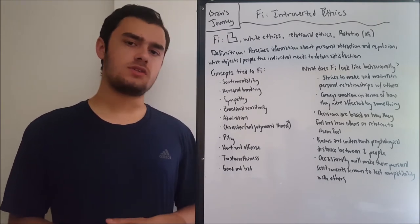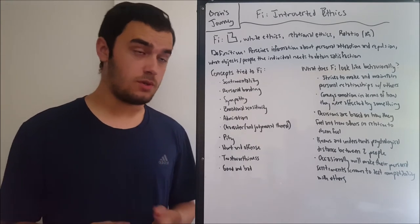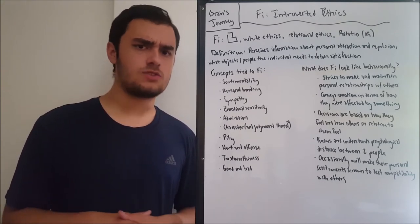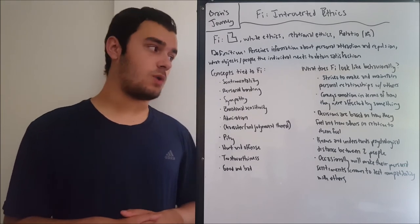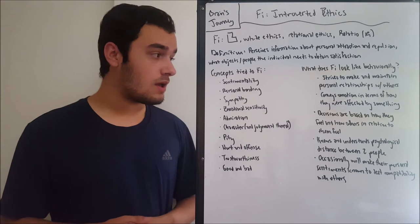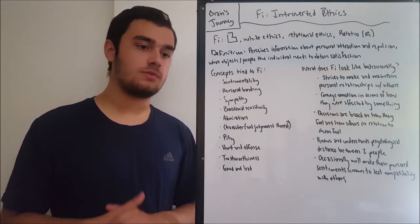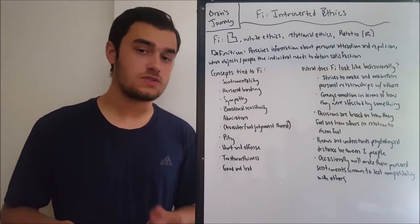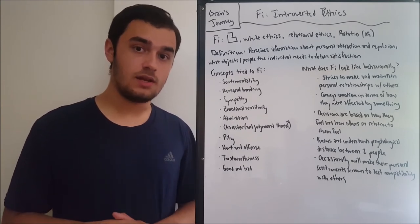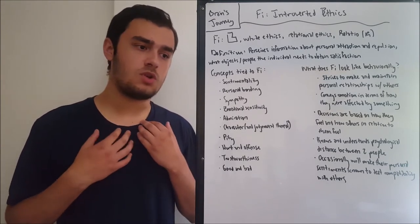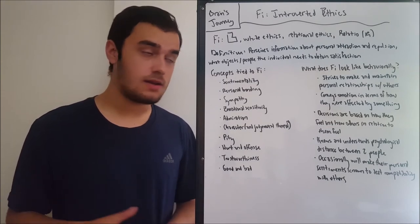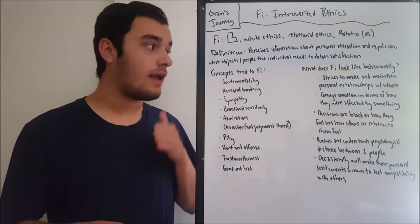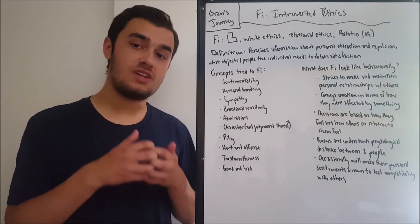Now let's see how those concepts are manifested in behavior. Behaviorally, FI strives to make and maintain personal relationships with others. FI often has a goal of personal satisfaction — emotional, physical, or intellectual. All of these are related to how the person expresses sentimentality. Intellectual stimulation, for example, may be connected to FI because it makes the person feel valued. So FI will search for these things that satisfy it, and the way it searches is through personal relationships and close, intimate bonds with individual people.